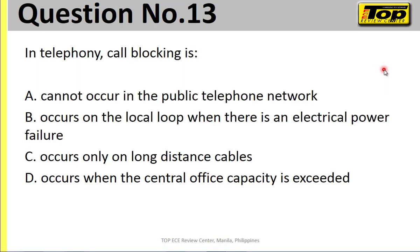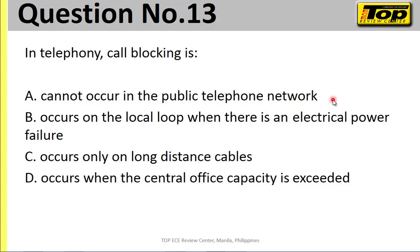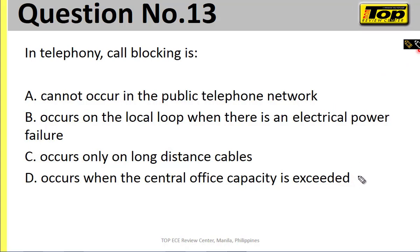That's number 12, letter A. Now question number 13: 'In telephony, call blocking is...' The choices are: A — cannot occur in a public telephone network (yes, it may occur); B — occurs in a local loop when there is an electrical power failure (no, because power is at the central office, not the local loop); C — occurs only on long distance cables (it also occurs in local loops); and D — occurs when central office capacity is exceeded. Letter D is correct.